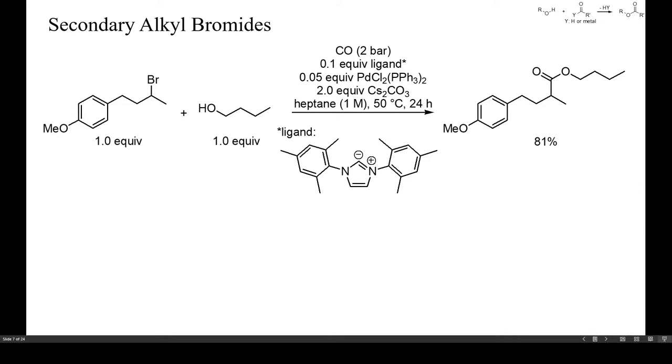A higher regioselectivity can be attained if instead of terminal alkenes, a secondary alkyl bromide is used as precursor to the alkyl-palladium complex, as in this example.